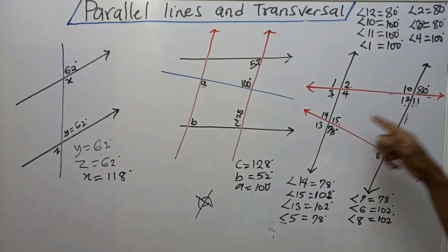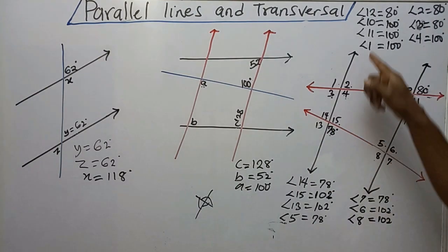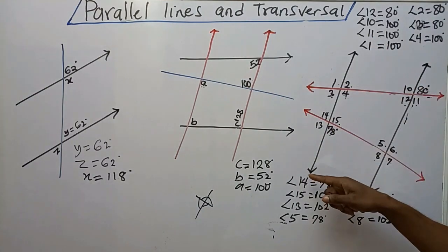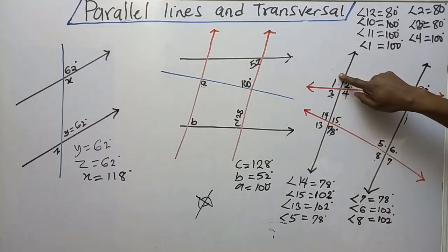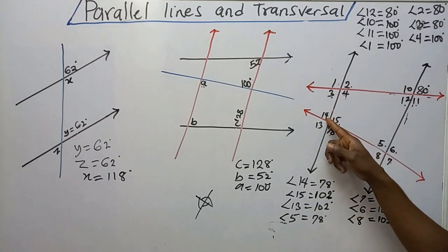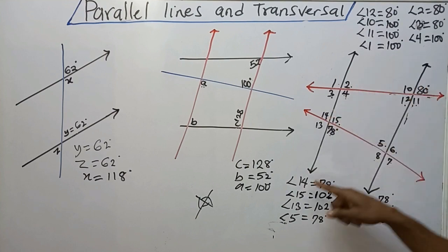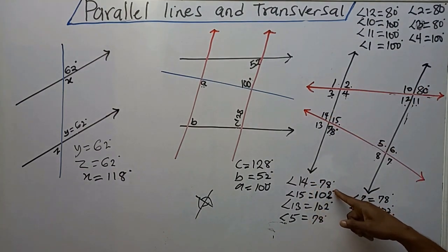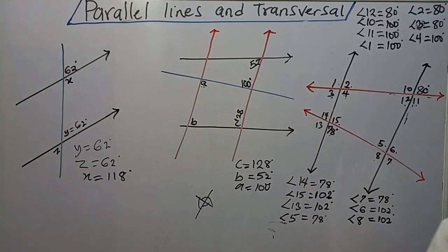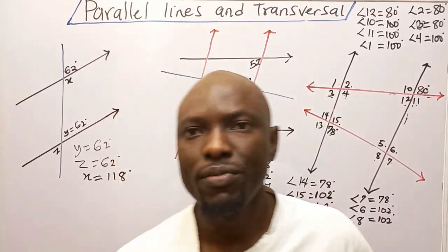Now I want to point out something before concluding: this line and this other line are not parallel, and this is a transversal. Even though angle 1 and angle 14 are corresponding because they are in the same position, they are not equal — because the lines are not parallel. Let's confirm: angle 1 is 100 degrees and angle 14 is 78 degrees. That confirms corresponding angles are only equal when the lines are parallel.